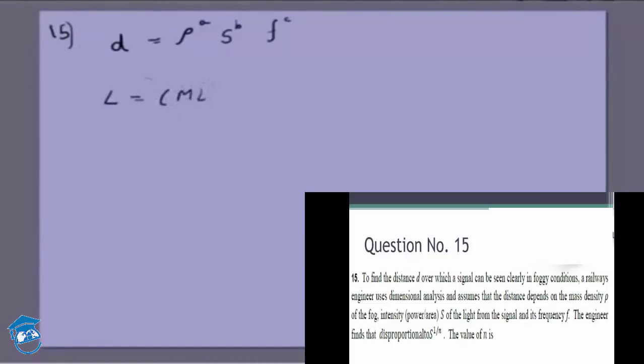What is density? Density is ML to the power minus 3, kilogram per meter cube, to the power a. What is S? S is power per area.